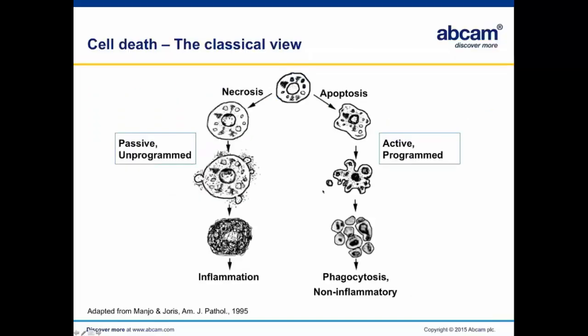I'm going to talk today about cell death. Cells are alive — we know this — and they can die. The historical, classical way that we've thought about cell death has been as a dichotomy between two different forms of death: one is the unprogrammed process of necrosis, and the other is the programmed and very well-described process of apoptosis.